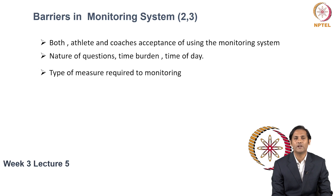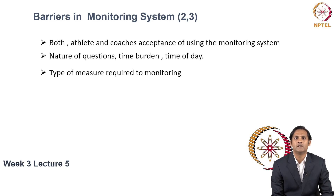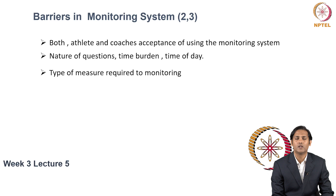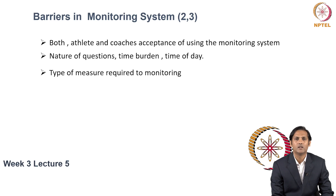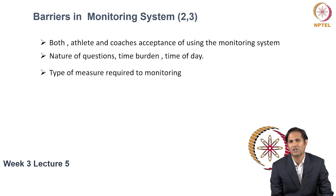Another barrier is the type of measures required for monitoring. Sometimes the load used in training for a given sports-specific fitness variable cannot be automatically integrated into the athlete monitoring system, and the technology demands a manual entry. At other times, the technology itself is not used at all. In these cases, the athlete monitoring system data would be incomplete, which becomes a barrier to getting an interpreted analysis for a given week and training block.